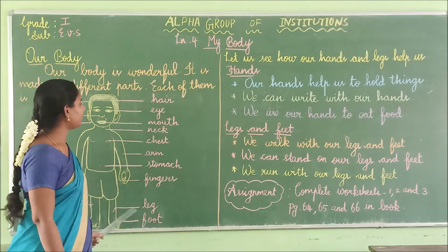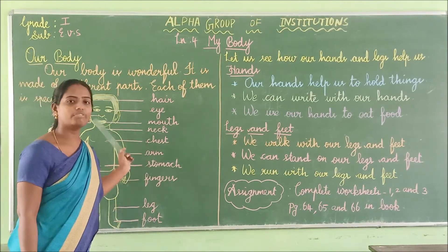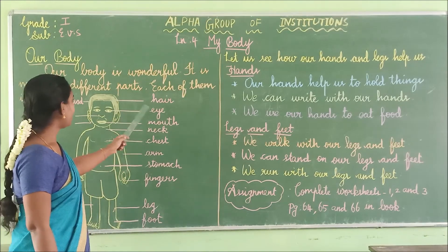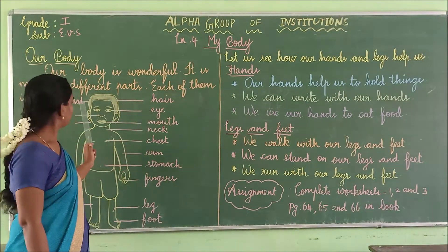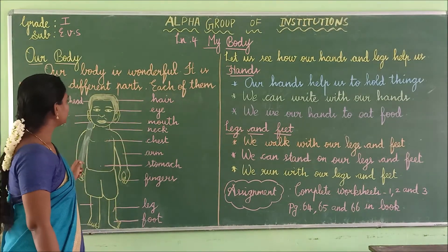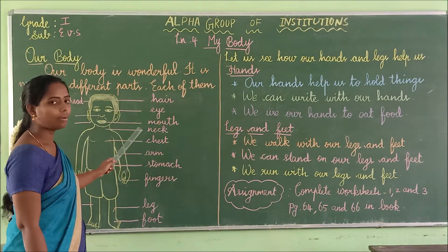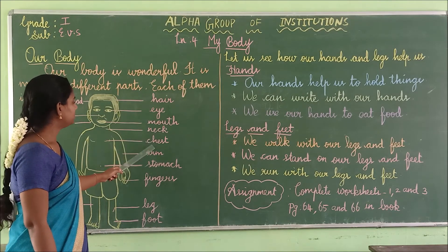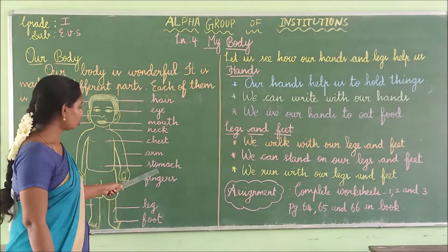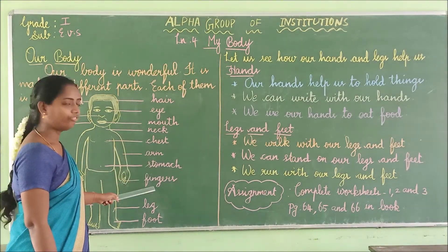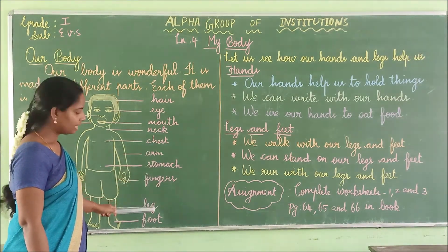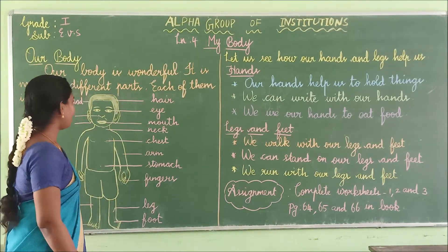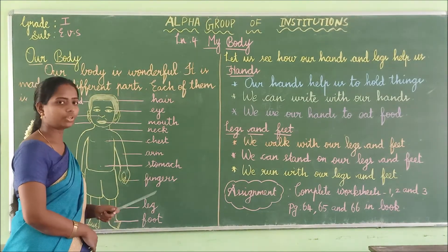We have all the different parts of our body — hand, head, eye, nose, ear, mouth, neck, chest, arm, stomach, fingers, knee, leg, foot, and toes.